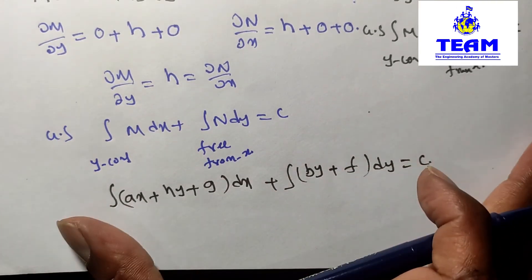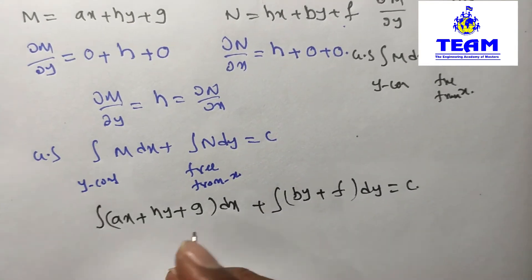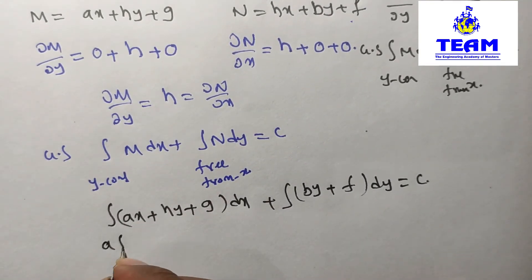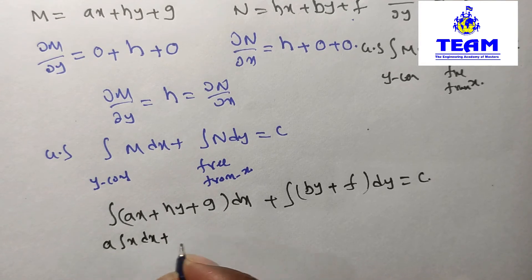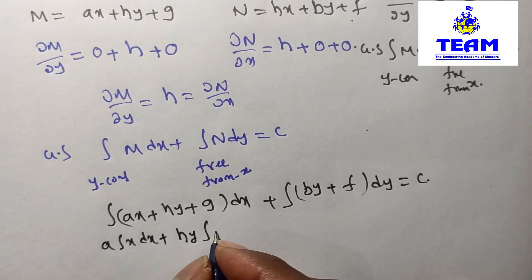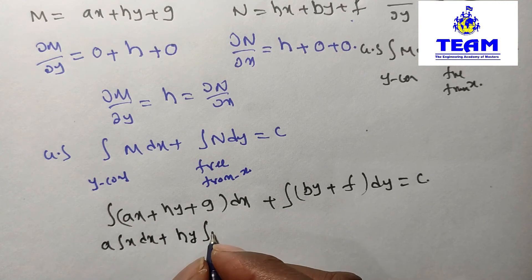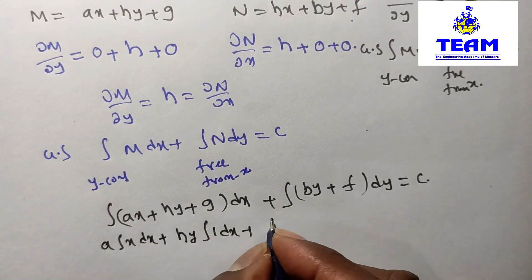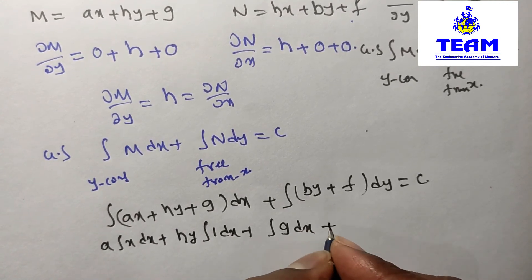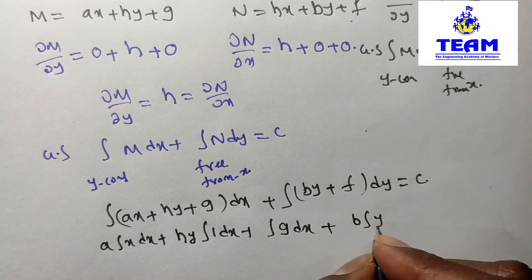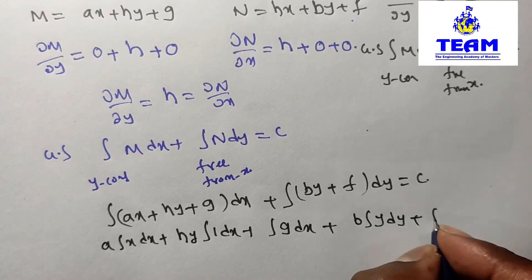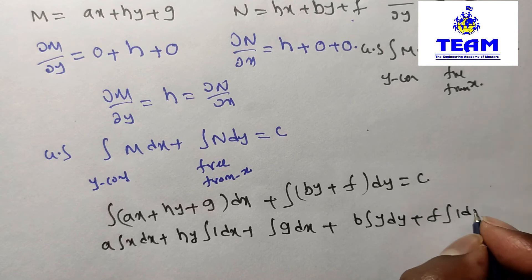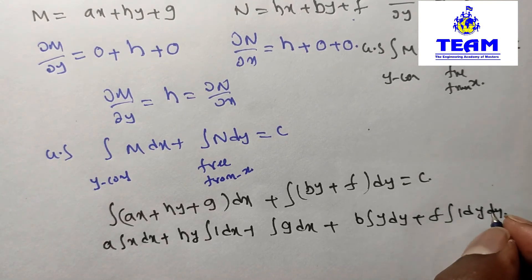Now observe: ax plus hy plus g. A times integral of x dx, plus hy is constant while integrating with respect to x (yes, y is constant), times dx, plus integral of g dx, plus b is constant times y dy, plus f is constant, you can write f times 1 times dy, which equals C.